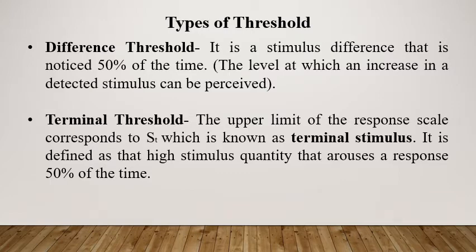Next is the difference threshold — that stimulus difference noticed 50% of the time by the observer; the level at which an increase in a detected stimulus can be perceived. Simply put, it is the level of stimulus needed for a person to recognize that a change has occurred. It is also known as the just noticeable difference or difference limen. For example, if you add one teaspoon of sugar to a cup of water, then keep adding more until you can say the sweetness is different from the initial level — that added amount is the difference threshold.